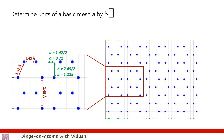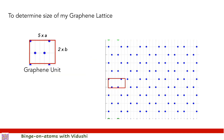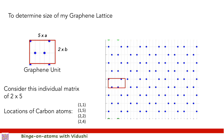Once I determined the values of a and b for the basic mesh, the question was what size my graphene sheet should be. I considered one unit of graphene consisting of 5a in x and 2b in y dimensions, containing four carbon atoms. If you consider this unit as a simple matrix of two rows and five columns, the four carbon atoms are located at positions (1,1), (1,3), (2,2), and (2,4).